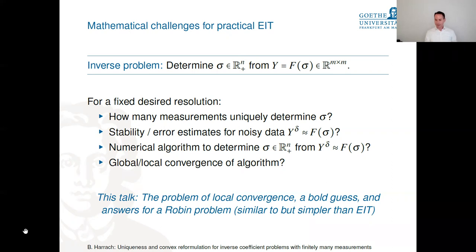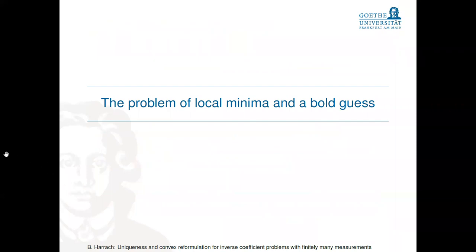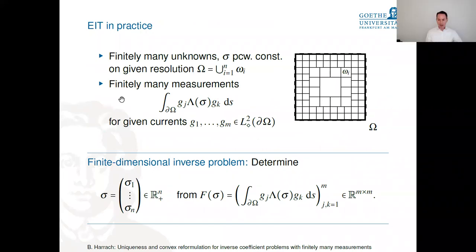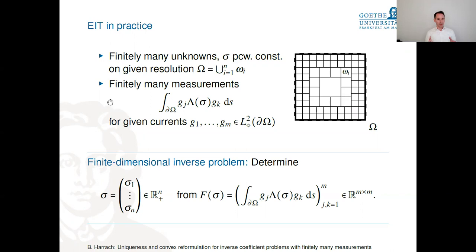Let me give a very simple EIT example with two unknowns. We have a circular domain: conductivity 1 in the outer region, σ₁ in a middle ring, and σ₂ in an inner circle. I measure the Galerkin projection using six trigonometric boundary currents: sin φ, cos φ, sin 2φ, cos 2φ, sin 3φ, cos 3φ — giving a 6×6 measurement matrix — and try to reconstruct the two unknowns σ₁ and σ₂.